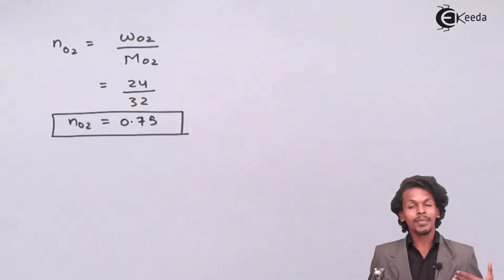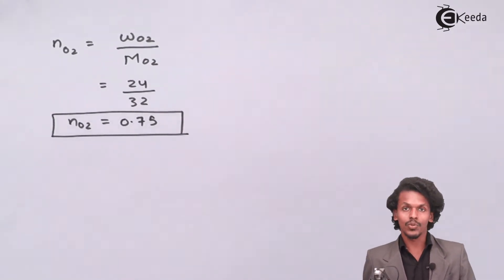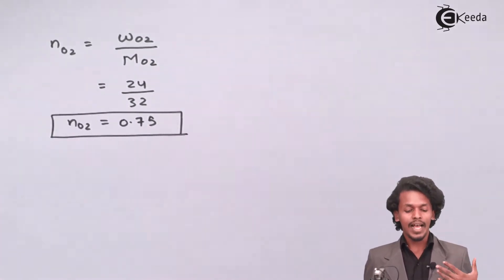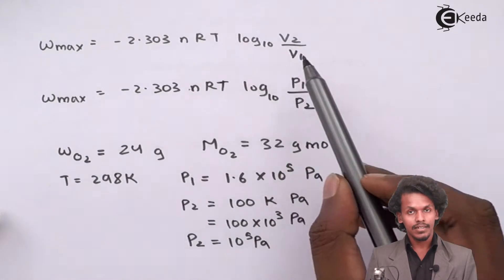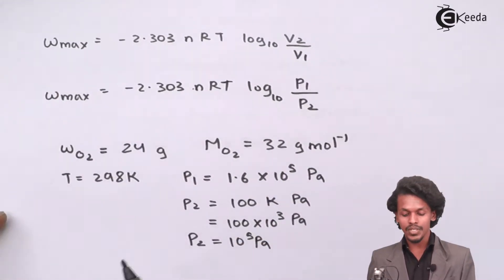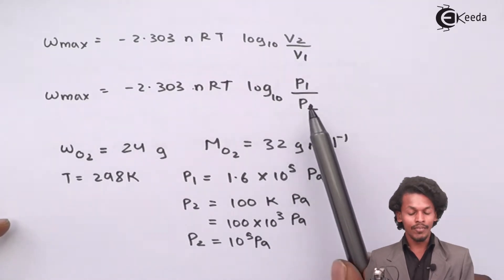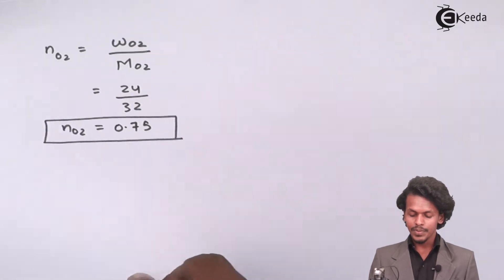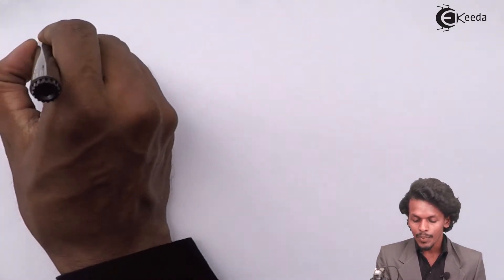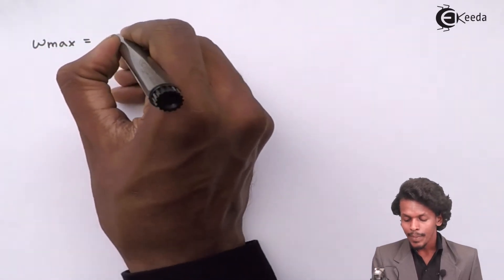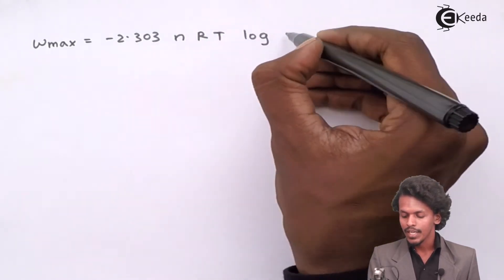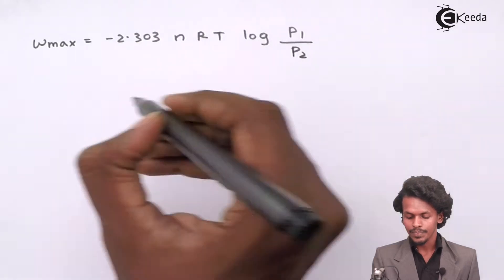Now it is easy to calculate Wmax. Since all the given values are related to pressure and not volume, we will substitute into the pressure form of the formula: Wmax = −2.303 nRT log₁₀(P₁/P₂).